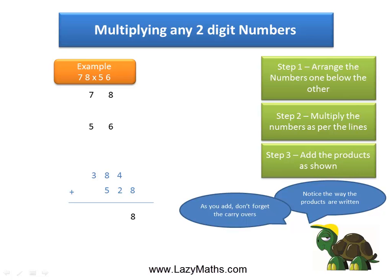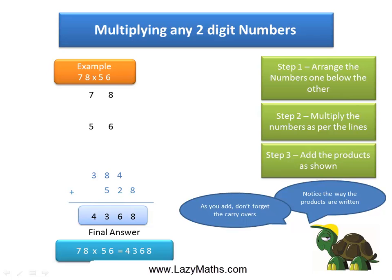So 8 comes in as 8, 4 plus 2 is 6, 8 plus 5 is 13 with a 1 carryover, and the 1 carryover with the 3 gives us a 4. This gives you the final answer of 4368 — so 78 times 56 equals 4368. And that's it, thank you.